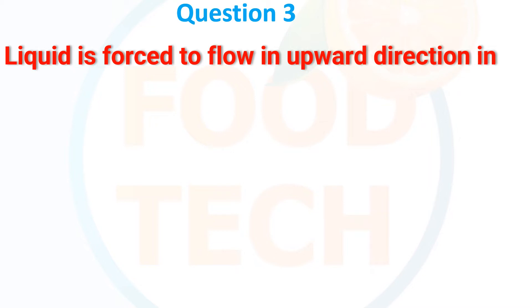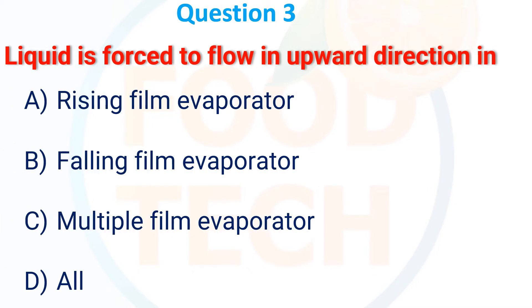Third MCQ: In which evaporator is liquid supposed to flow in an upward direction? Options: (A) Rising film evaporator, (B) Falling film evaporator, (C) Multiple effect evaporator, and (D) All. The correct answer is A — rising film evaporator.